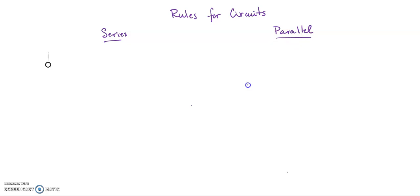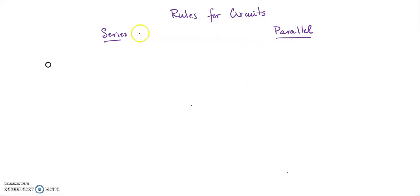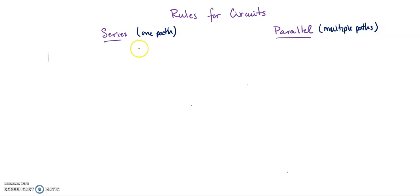When you're talking about circuits, there are two types. We've got series, which means everything is all in one path — like the world series is a series of games, so there's only one path all in a row. But if it's parallel, you've got parallel lines next to each other, so you have multiple paths. The electron in a series circuit has no choice, while in parallel, electrons have choices or options that they can go down.